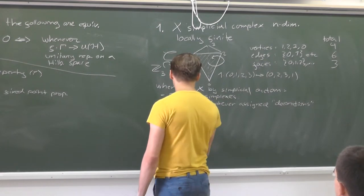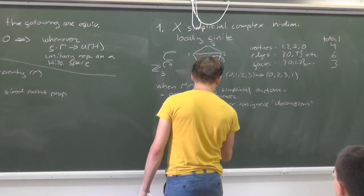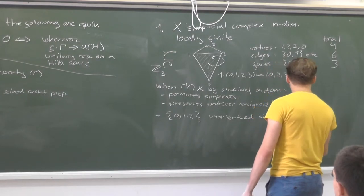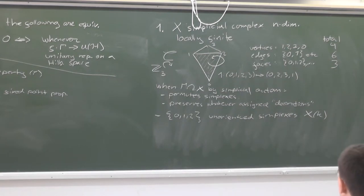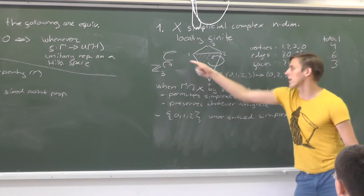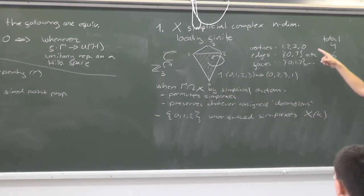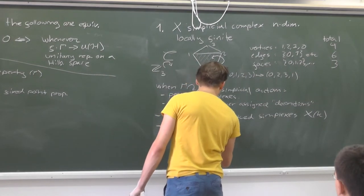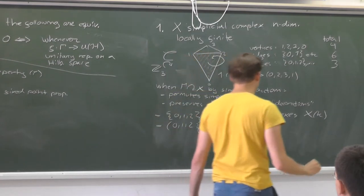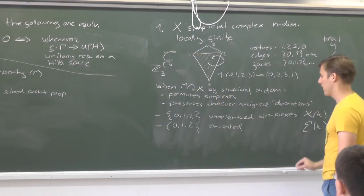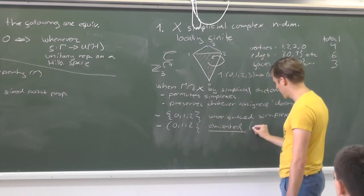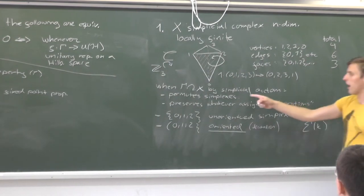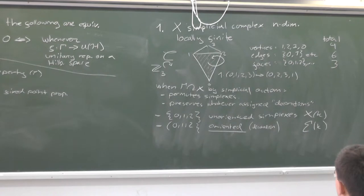I denote the unoriented simplices, and the set of them — a general k-simplex. For example, in the ice cream cone, X_0 would be the set {0,1,2,3}. I also denote the oriented ones. The orientation is a decoration, and the group acting by simplicial automorphisms has to preserve the orientations.